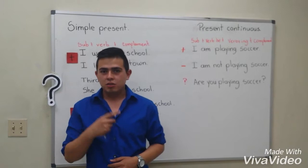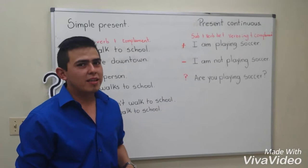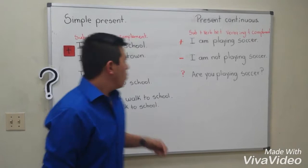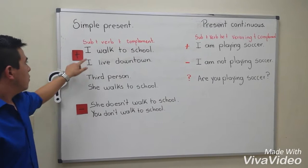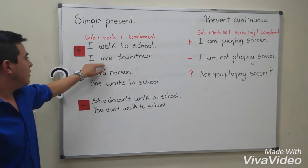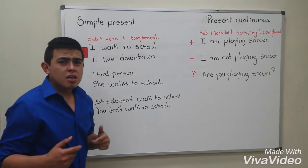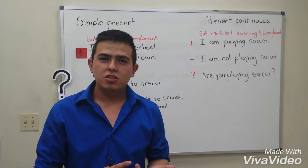Hi, everyone. I'm Elie Rivera. My partner explained about will and won't — it was an interesting topic, right? But now I'm here to review the simple present and present continuous. When we use the simple present, we use it for things that happen always or usually. For example, I walk to school. We use subject, verb, plus complement. Another sentence: I live downtown. Don't forget the S at the end of the verb when you use third person — he, she, and it.